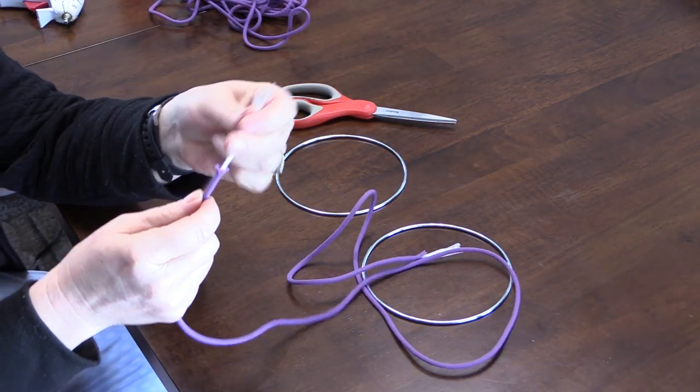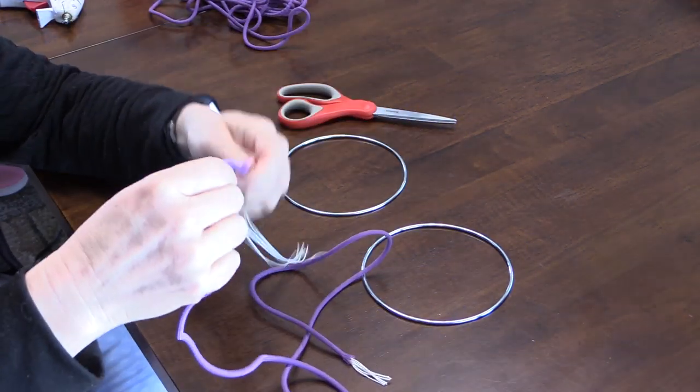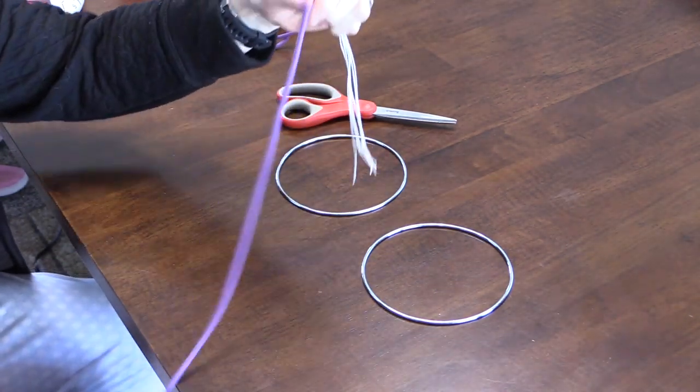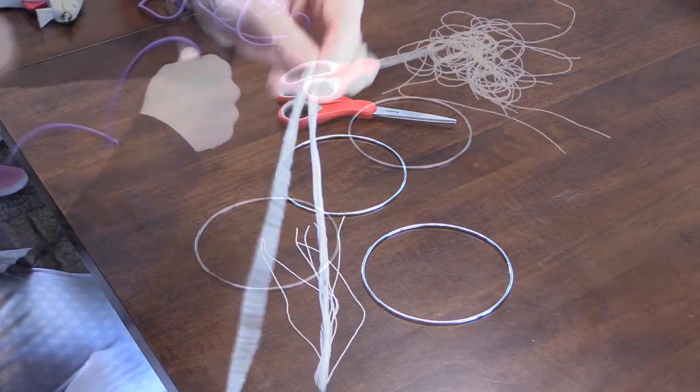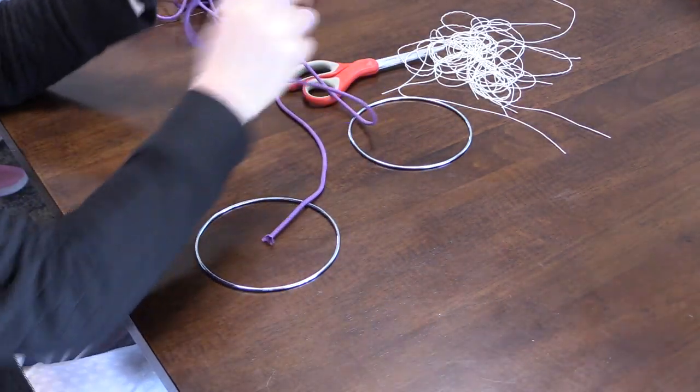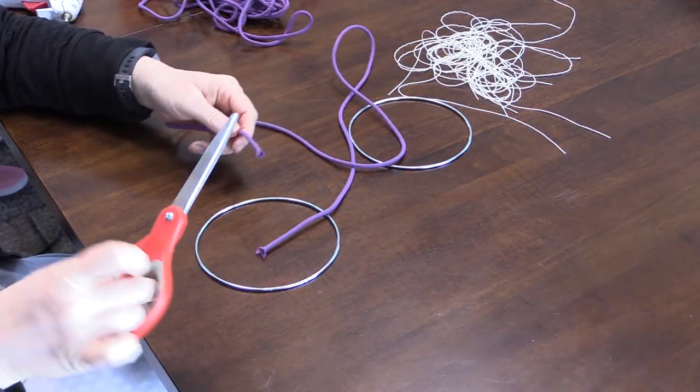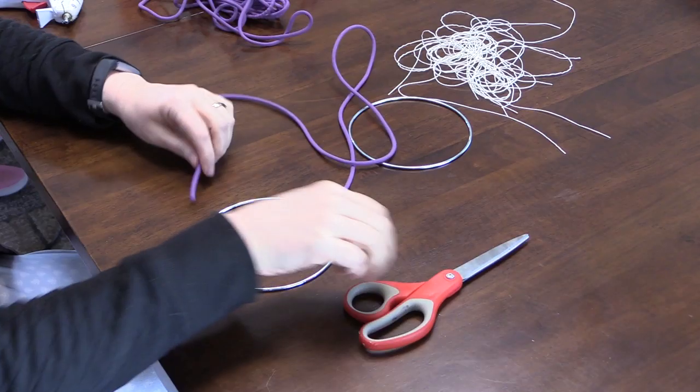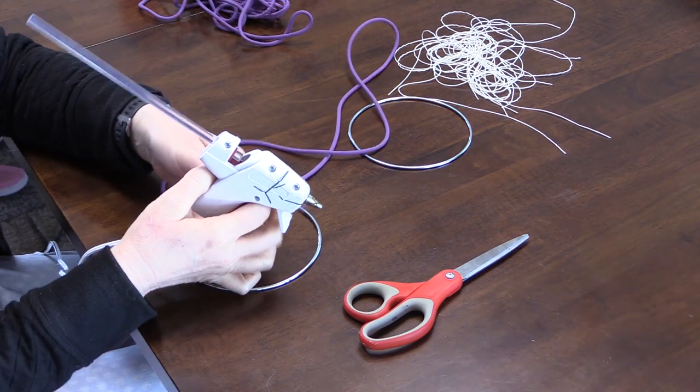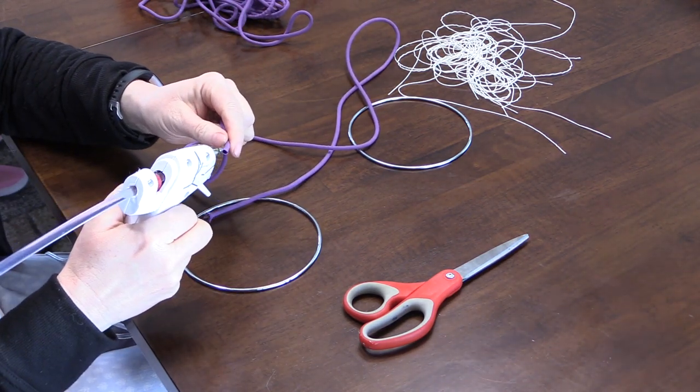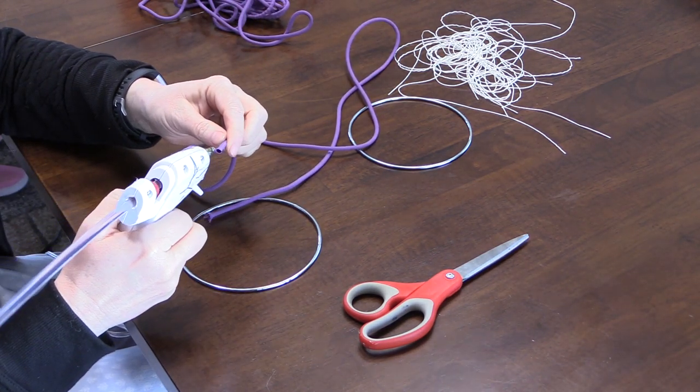So first you cut the paracord and then you pull out the inside of the paracord, and that is these little pieces of white string. There's like seven pieces of string inside the paracord. So after I pulled out the string, then I just sealed down one end of the paracord with a little bit of my hot glue gun, and this will help to keep the ends from fraying.